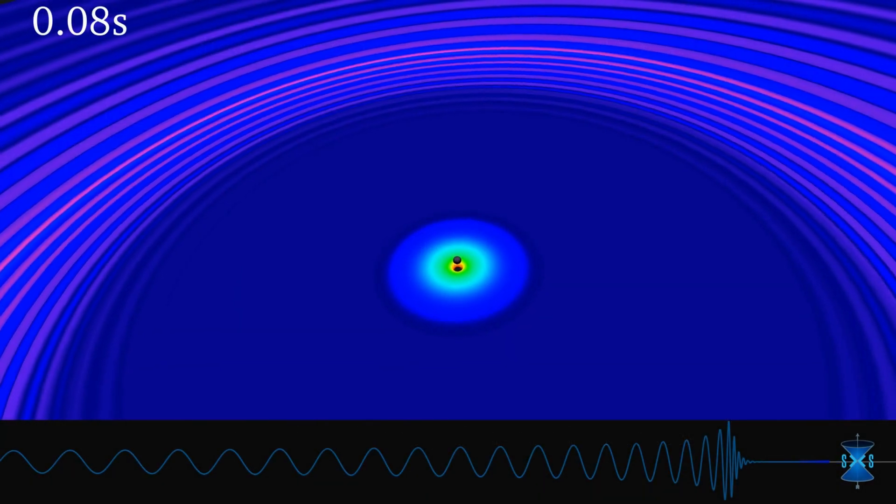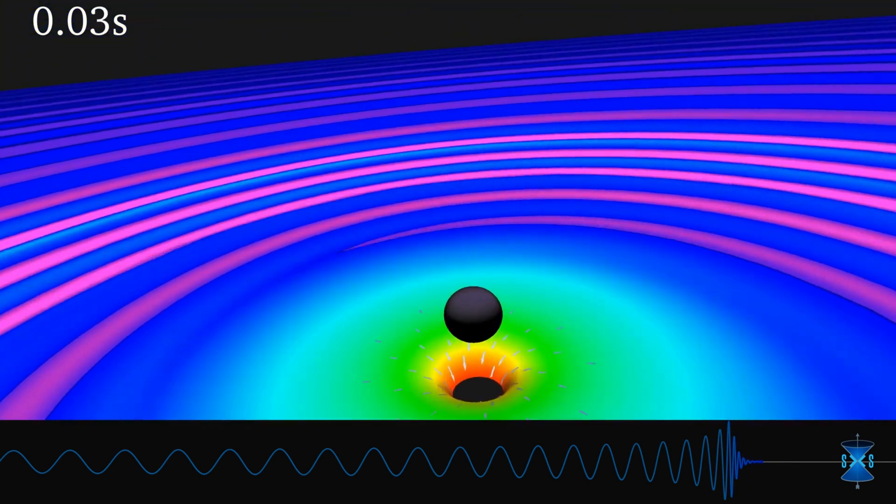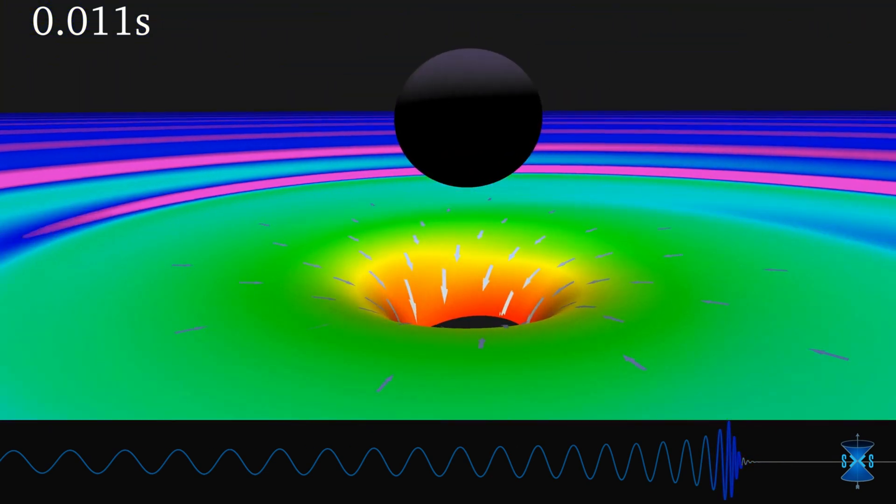Similarly, physicists theorize that they would see gravitons when zooming in to waves of space-time called gravitational waves.